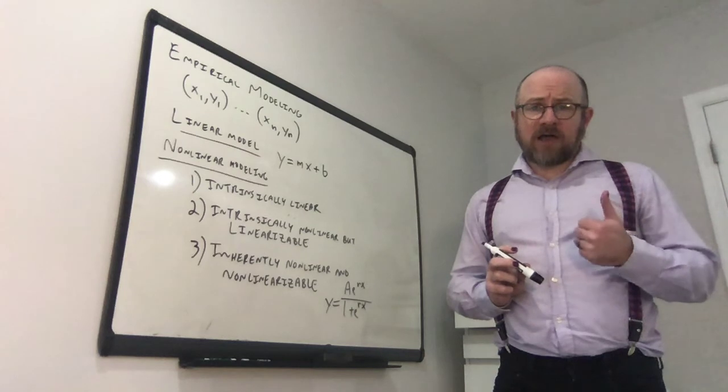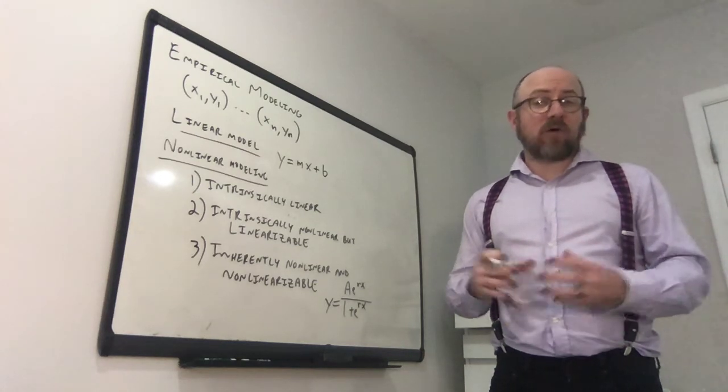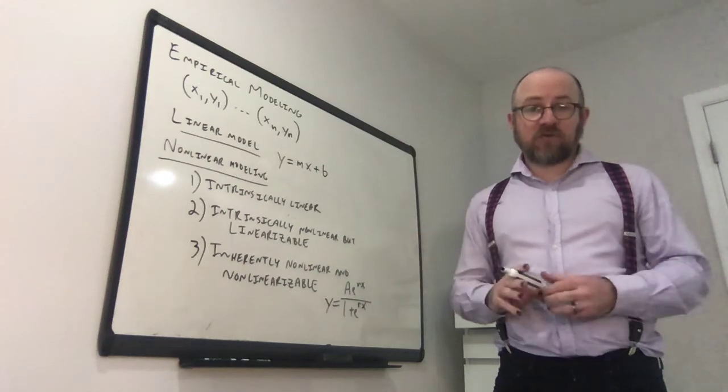So in the next lecture we'll talk about covariance and correlation, which are ways of determining kind of how linear the relationship between two variables is.